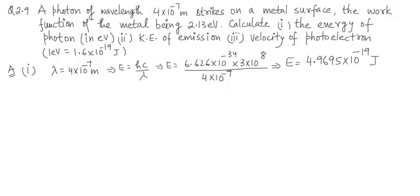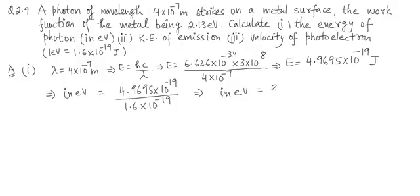And you can convert it in electron volt. You can apply the unitary method. So in electron volts, this will be simply 4.9695 into 10 to the power minus 19 divided by 1.6 into 10 to the power minus 19. So this turns out to be 3.1 eV.